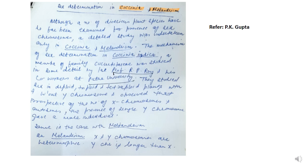Let us discuss sex determination in Coccinia and Melandrium. Although a number of dioecious plant species have been examined for sex chromosomes, a detailed study was undertaken only in Coccinia and Melandrium. The mechanism of sex determination in Coccinia indica, a member of family Cucurbitaceae, was studied in detail by late Professor R.P. Roy and his co-workers at Patna University. They studied sex in diploid, triploid, and tetraploid plants with and without Y chromosomes and observed that irrespective of the number of X chromosomes and autosomes, the presence of a single Y chromosome gave a male individual.